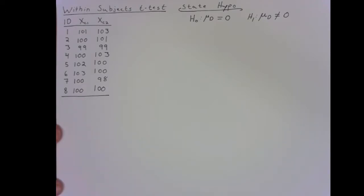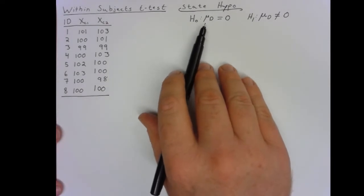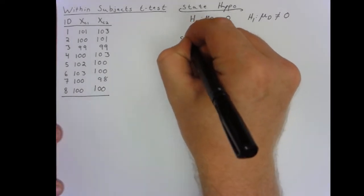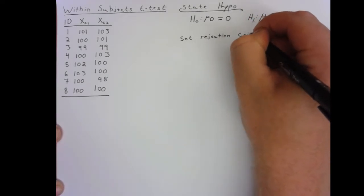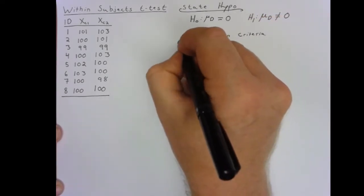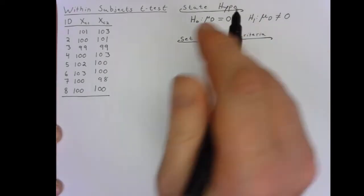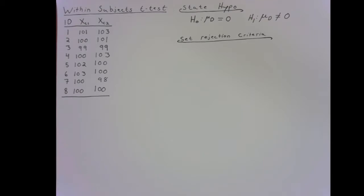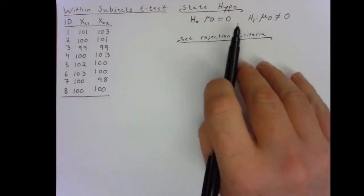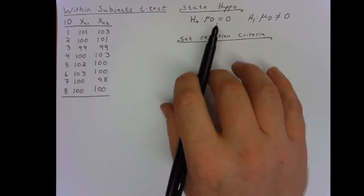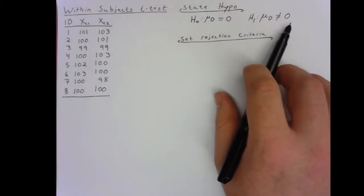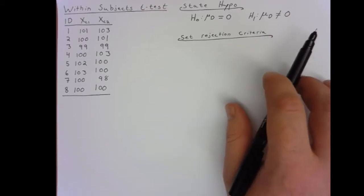After you have those hypotheses laid out, you need to set the criteria for which you would actually reject this null hypothesis. To set your rejection criteria, there are several things that you need to know from the get-go. First is whether you're conducting a two-tailed test or a one-tailed test. If we look at our null and alternative hypotheses, this will cue us in. In this case, because something could be not equal to zero, either being above it or below it, we have a two-tailed test.